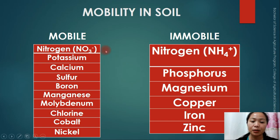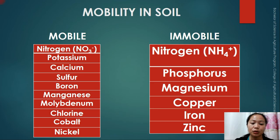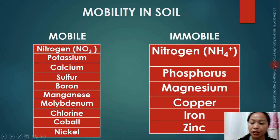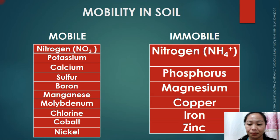Apart from nitrogen, other mobile nutrients in the soil include potassium, calcium, phosphorus, boron, manganese, molybdenum, chlorine, cobalt, and nickel. For immobile nutrients in the soil, we have nitrogen (as ammonium), phosphorus, magnesium, copper, iron, and zinc. Phosphorus is considered an immobile nutrient in the soil.